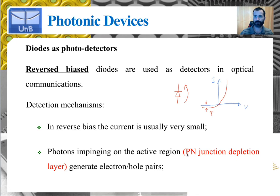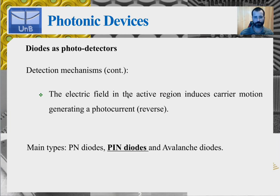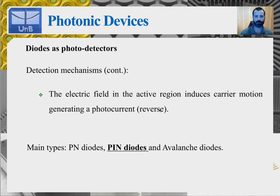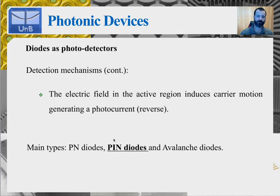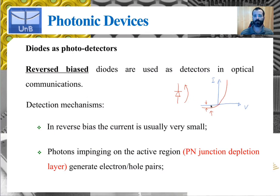Photons impinging on the active region — the depletion layer — generate electron-hole pairs, and the electric field in the active region induces carrier motion, generating a reverse photocurrent proportional to the optical power impinging on the diode. The example illustrated is the PN junction diode, but other types such as PIN diodes — with an intrinsic material between the P and N-type materials — and avalanche diodes are more often used. In all of these configurations, the diodes are reverse biased.